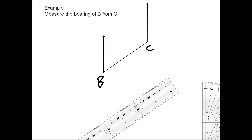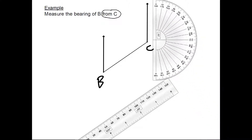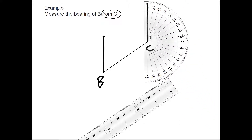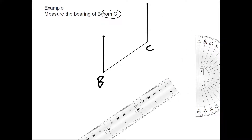Because I want the bearing of B from C, I need to start from C — I need to start measuring clockwise from C. There are two ways of doing this. The way I like to do it is to measure the interior angle inside here. Because angles around a point add up to 360, if I want the exterior angle shown in red, I take away the interior angle from 360 and I'll get exactly the bearing I want.